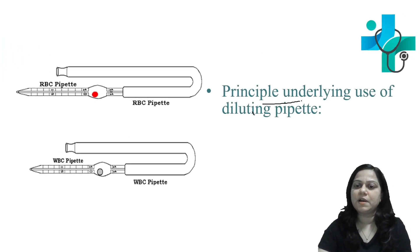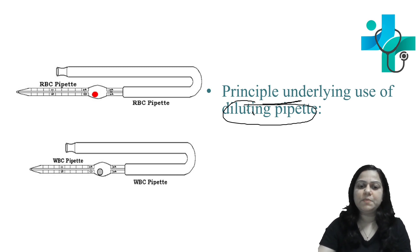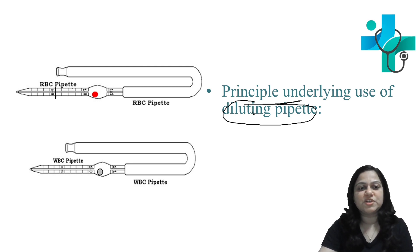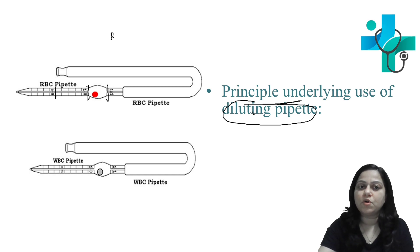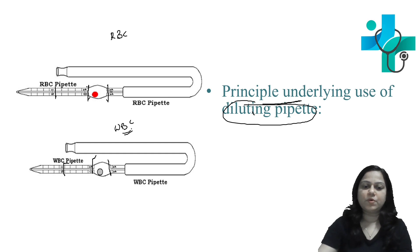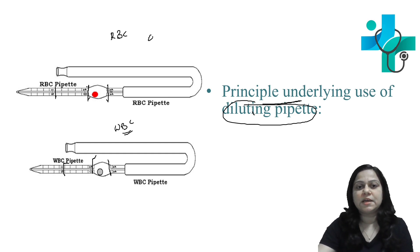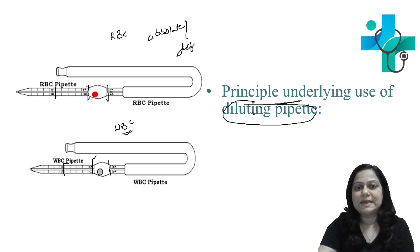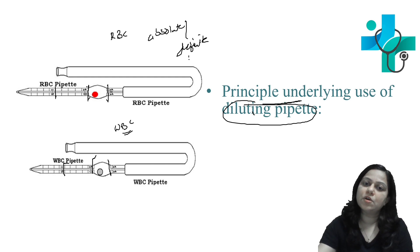What is the principle underlying the use of these diluting pipettes? It is very important to understand that the numbers written on the pipette — 0.5, 1, and 10 on the RBC pipette, and 0.5, 1, and 11 on the WBC pipette — do not indicate absolute or definite volume in terms of cubic mm or microliter.